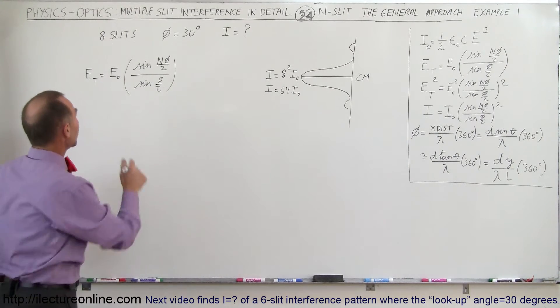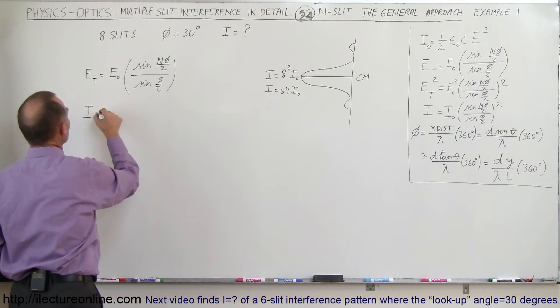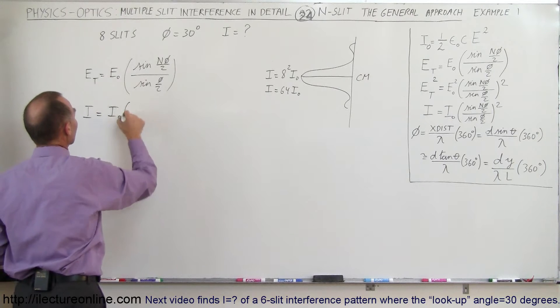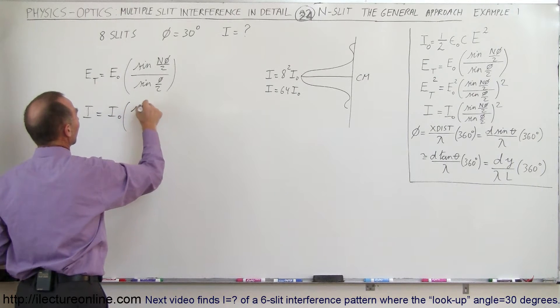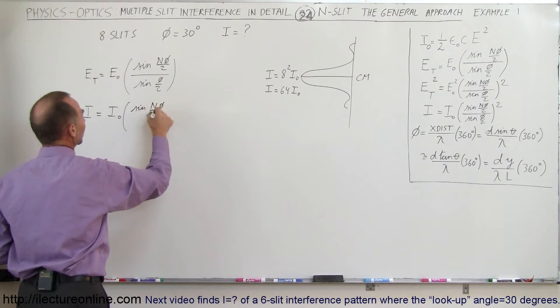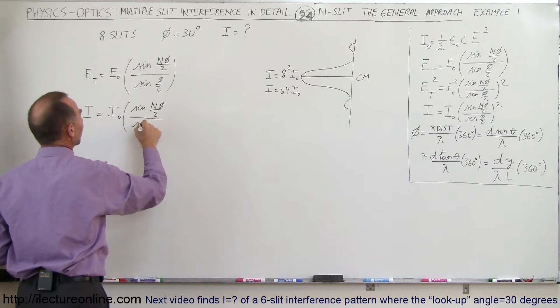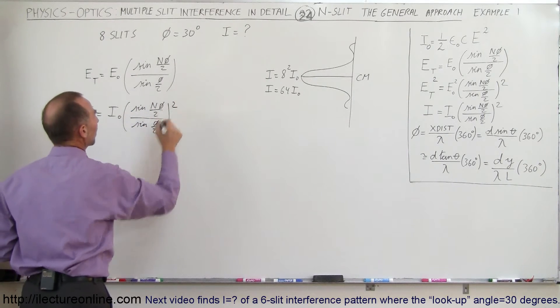Then we also know that the intensity can be directly found by saying that's equal to i sub-naught times the sine of n times the phase angle divided by 2 divided by the sine of the phase angle divided by 2 quantity squared.